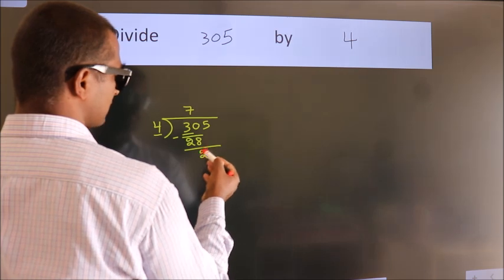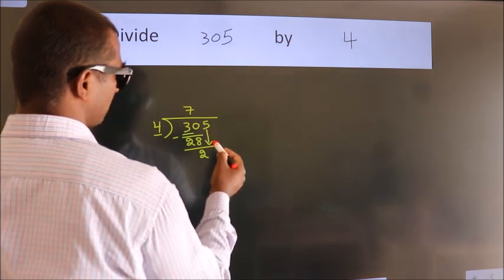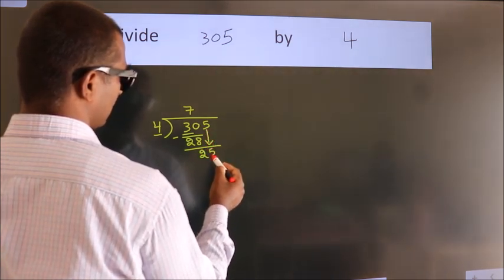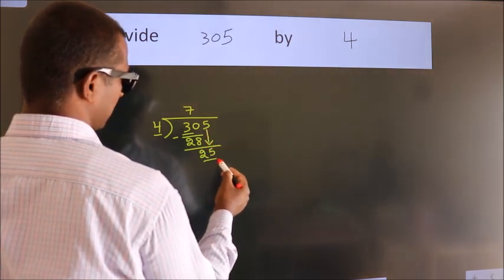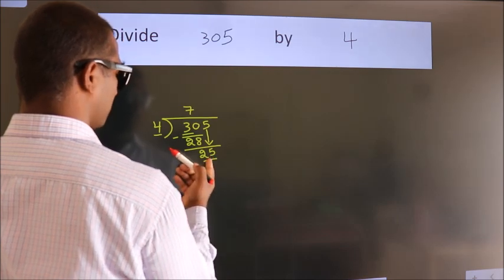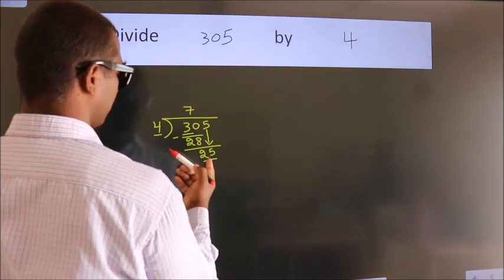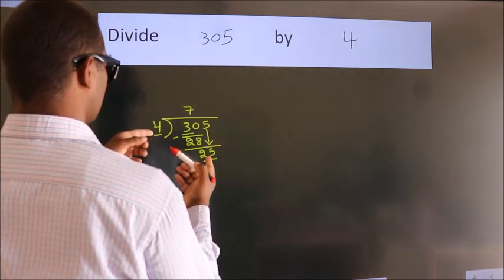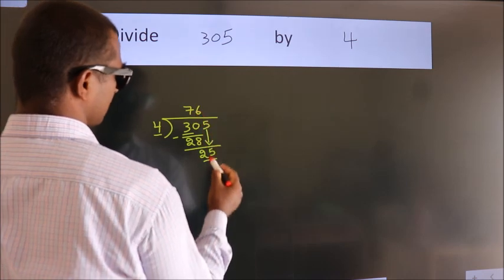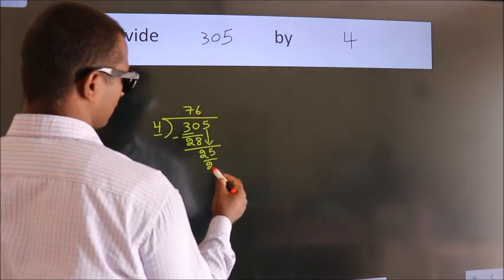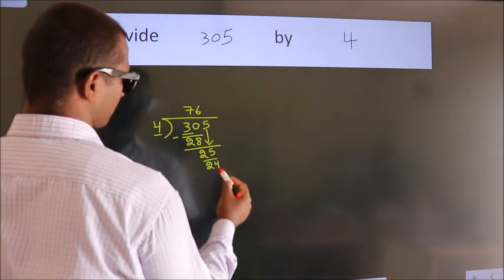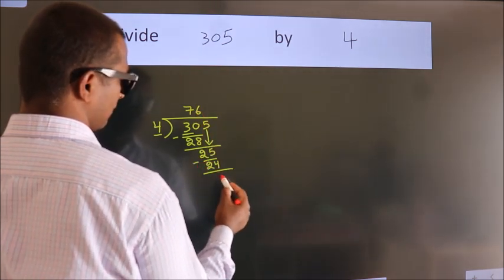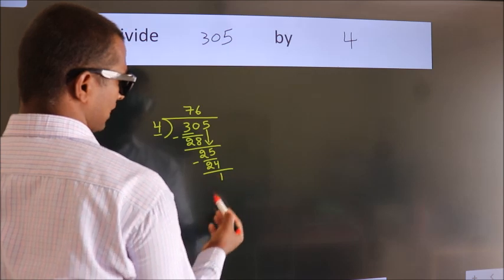After this, bring down the beside number. So 5 comes down, giving us 25. A number close to 25 — in the 4 times table is 4 sixes, 24. Now we subtract and we get 1.